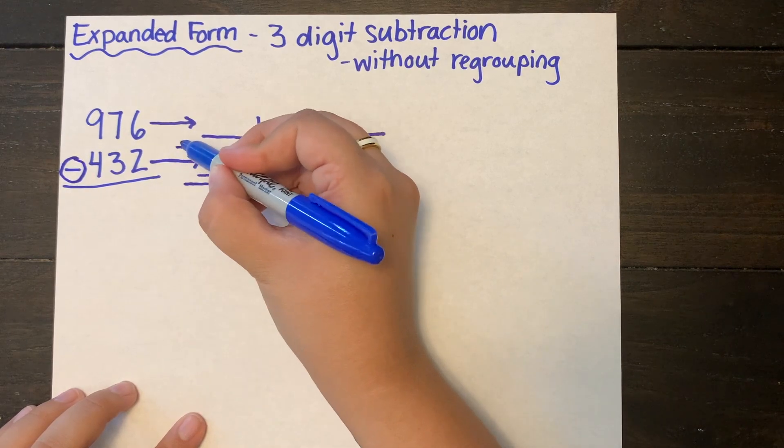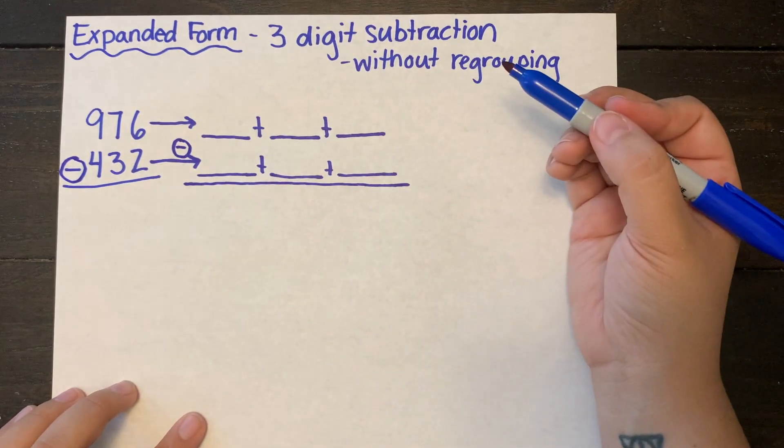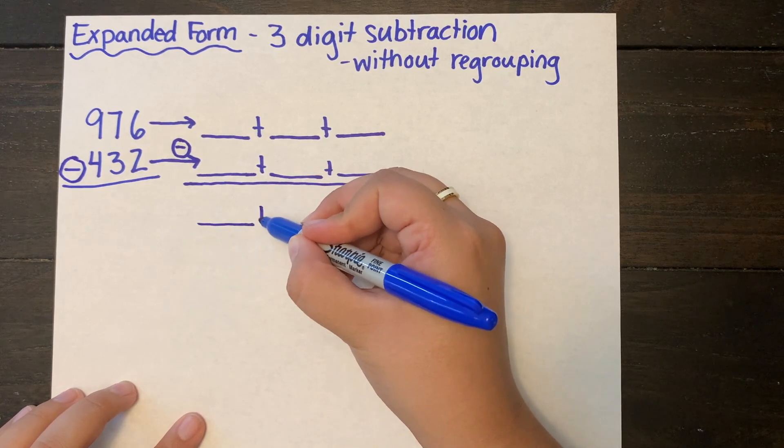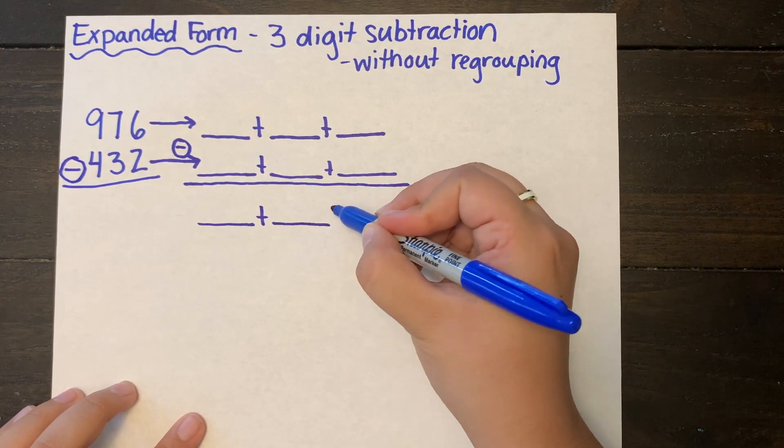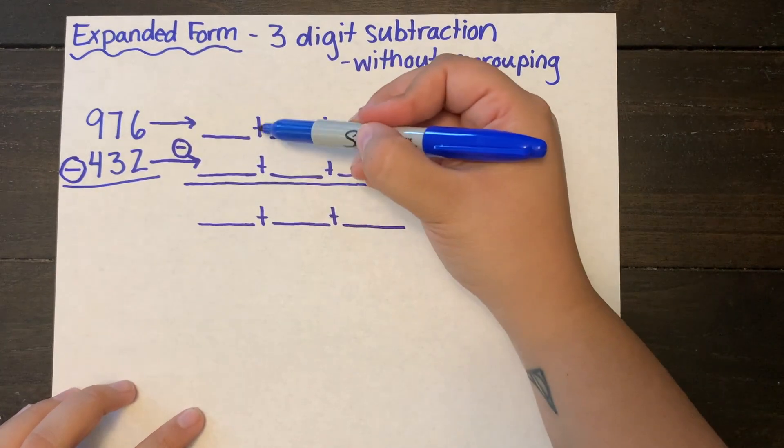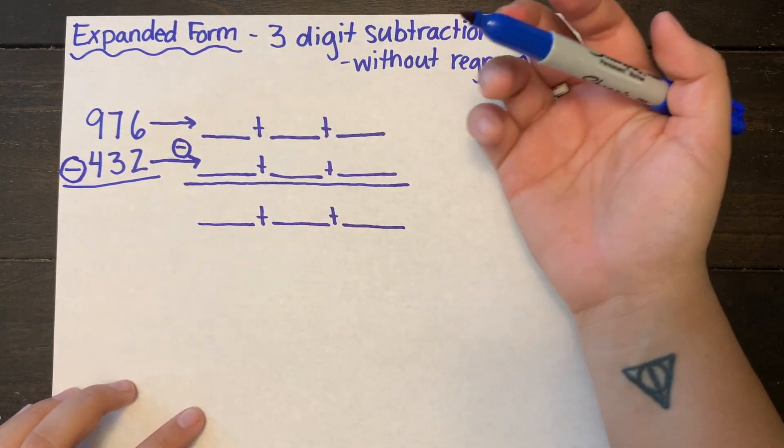And I'm going to rewrite my subtraction symbol just because it can be really confusing with all these addition symbols. And I'm drawing out my placeholder for my answer which is also going to be three digits. And I'm making sure that everything's lined up.